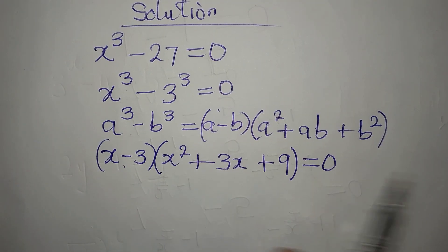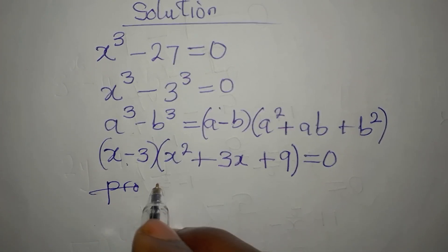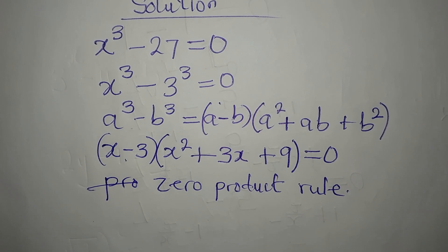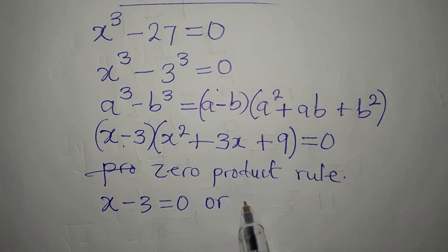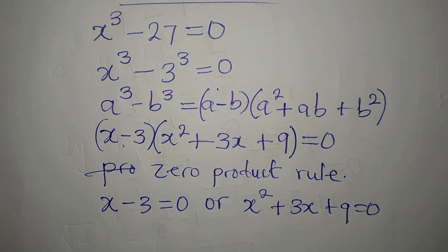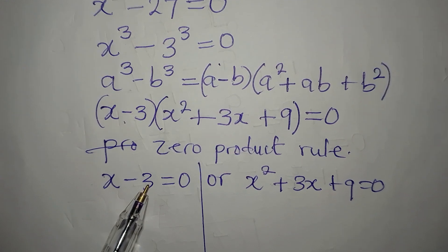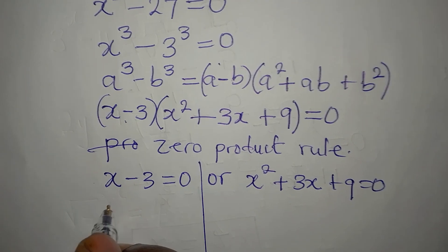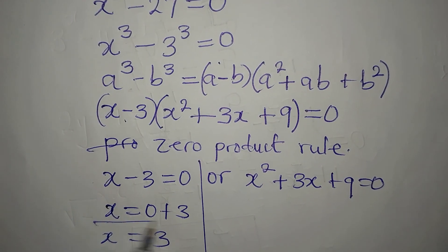Now we are multiplying both of them to get 0, so we apply the zero product rule. So we say that it is either x minus 3 is equal to 0, or x squared plus 3x plus 9 is equal to 0. This is a linear equation, so if you solve it you will have one solution, and this is quadratic — if you solve it you will get two solutions. So x is 0 plus 3, meaning x equals 3. This is one of the solutions.